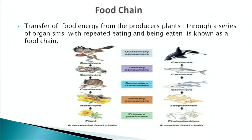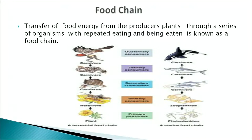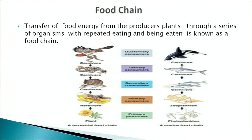A food chain is the transfer of food energy from the producer plants through a series of organisms with repeated eating and being eaten. Each step in a food chain is known as a trophic level. The trophic levels are: autotrophs at the first trophic level, herbivores at the second, carnivores at the third, then first-level and second-level carnivores and so on. There is a limited number of trophic levels in a food chain. These are two examples of aquatic and terrestrial food chains.